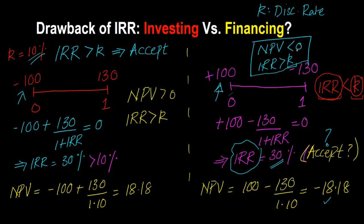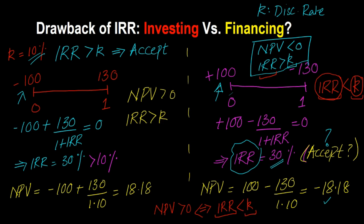That explains why in this case the NPV is coming out to be less than zero — the financing does not make sense because the IRR, which is the actual rate at which we are borrowing (30%), is more than the rate at which we could have borrowed elsewhere (10%). Put differently, for financing prospects, NPV will come out to be greater than zero if and only if the IRR is less than K. Financing will only be positive NPV if the rate at which we are borrowing is less than the alternative borrowing rate — which is different from the normal consistency you see between NPV and IRR.